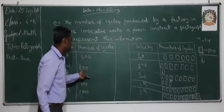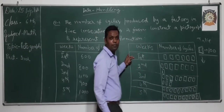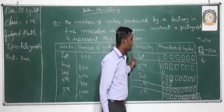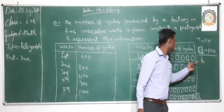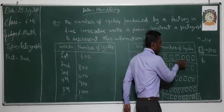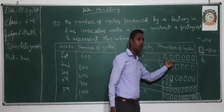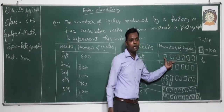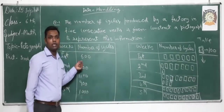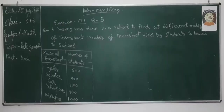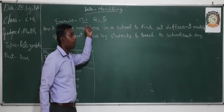This is a representation of data in the form of pictures. You can read the data easily — for example, here one scale represents 100, so 6 scales equals 6 × 100, which is 600. Next, we consider another example from exercise 7.15.1.